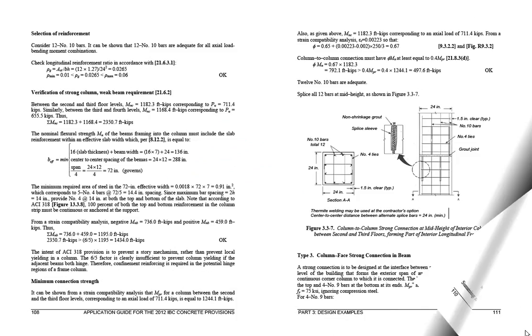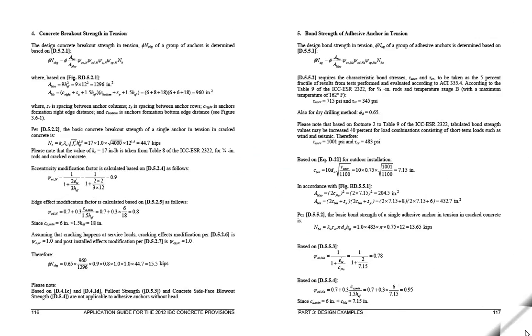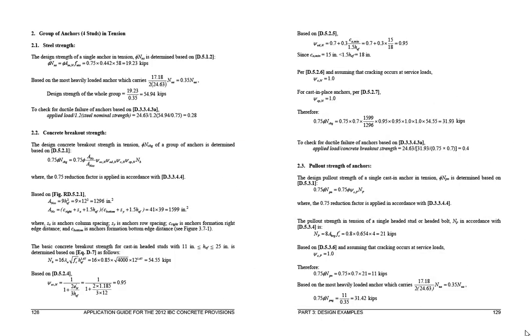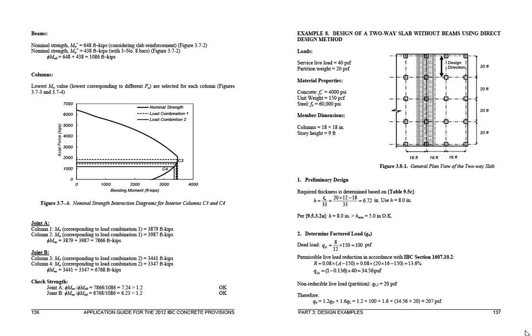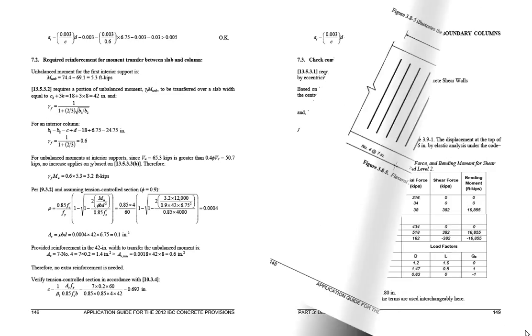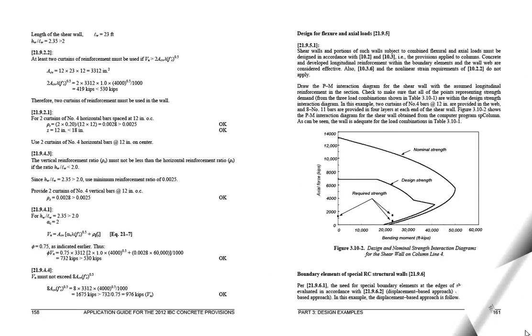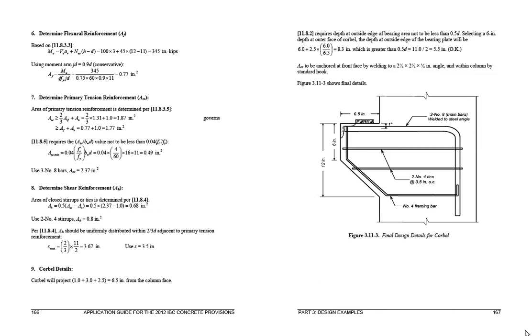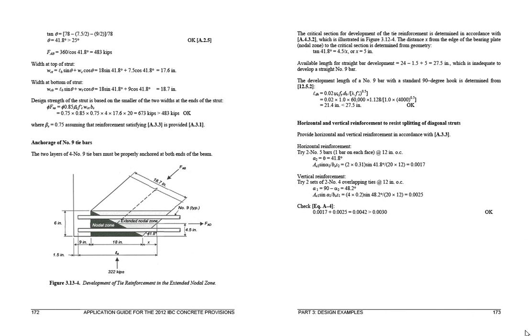Part 3 of the book includes 12 design examples which cover a wide variety of topics, including unified design examples, design of connections in a special moment precast frame building, design of anchor bolts based on both allowable stress design in IBC and Appendix D of ACI 318, illustration of the strong column weak beam requirements, design of a two-way flat plate, design of special shear walls, application of the shear friction method, and application of the strut and tie models.